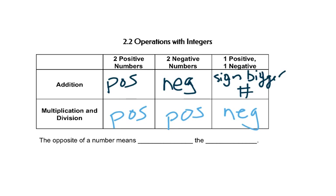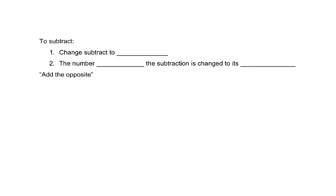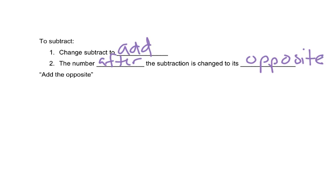The opposite of a number means that you change the sign. Now let's look at how to subtract — that's why subtraction is not listed in the table above. In order to subtract, you have to do two things: first, you change the subtract sign to addition, and the number after the subtraction sign gets changed to its opposite. So when we're subtracting, we say we add the opposite.